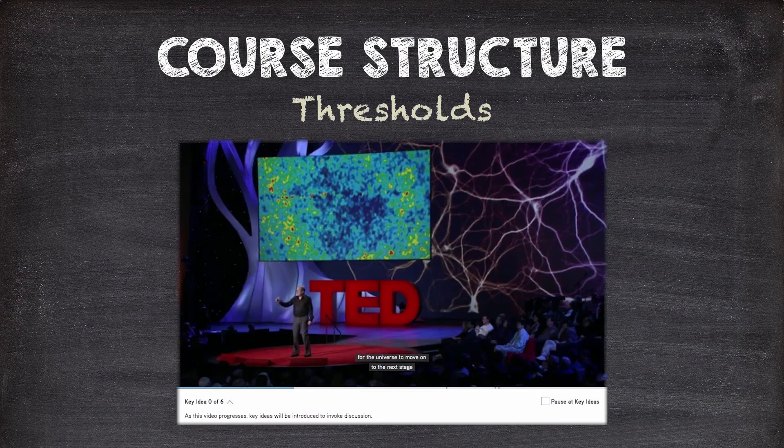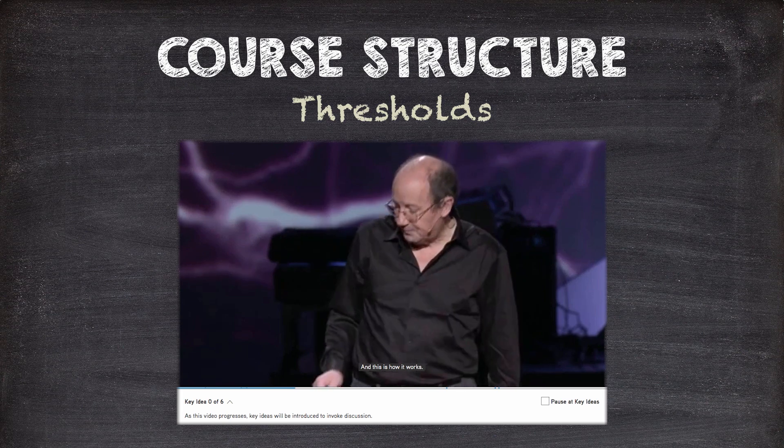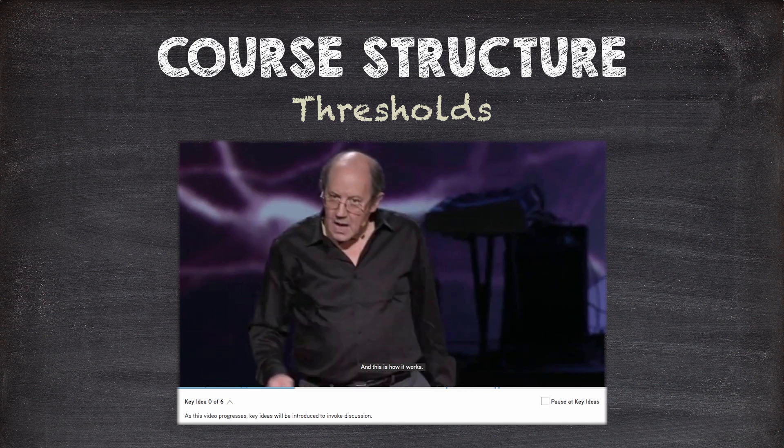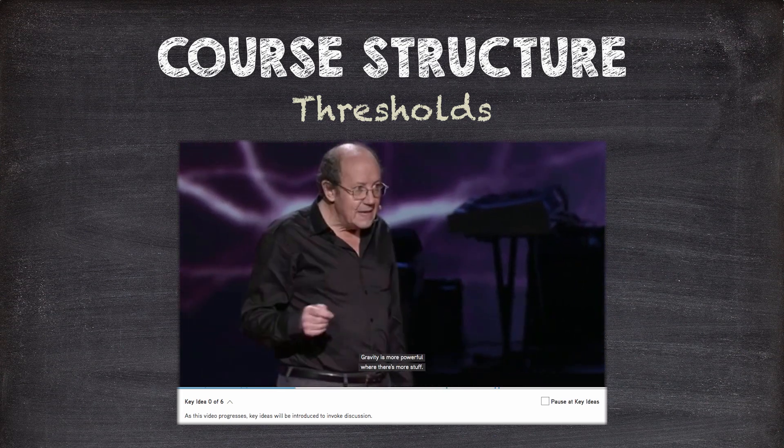If you haven't seen David Christian's TED Talk, or if it's been a while, check it out. Big History is made up of eight thresholds. Each represents a moment when the universe got more complex, so much so that there was no going back.